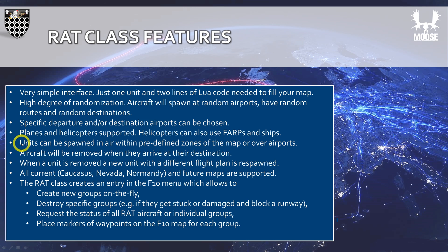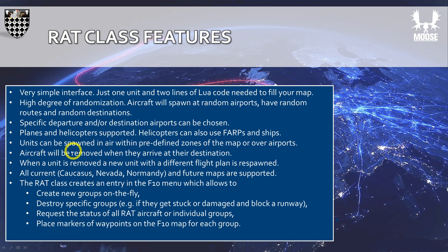By default, aircraft are spawned at airports on the ground, but it's also possible to let them spawn in the air within predefined zones or above airports. Once aircraft have reached their destination, they will be removed, and at the same time a new aircraft is spawned at a different airport with a completely new flight plan.